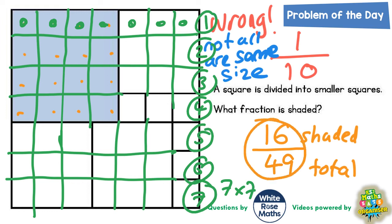You could go a stage further and work out the fraction that's not shaded. Well if 16 out of 49 is shaded, to get from 16 up to 49 you would need another 33. So that would be 33 out of 49 unshaded.